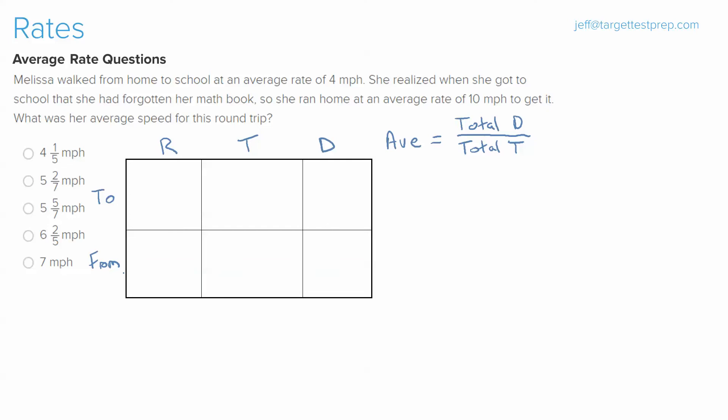So let's give this a read and then we can start jotting information into our chart. The problem reads, Melissa walked from home to school at an average rate of 4 miles per hour. She realized when she got to school that she had forgotten her math book, so she ran home at an average rate of 10 miles per hour to get it. What was her average speed for this round trip?